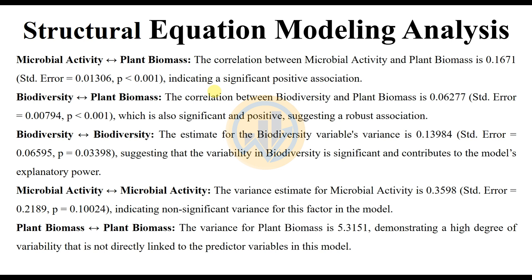The estimate for the Biodiversity variable's variation is 0.13984, with a P value of 0.03398, suggesting that the variability in Biodiversity is significant and contributes to the model's explanatory power. The variation estimated for Microbial Activity is 0.3598, with a P value of 0.10024, indicating non-statistically significant variation for this factor. The variation for Plant Biomass is 5.3151, demonstrating a high degree of variability not directly linked to the predictor variables in this model.